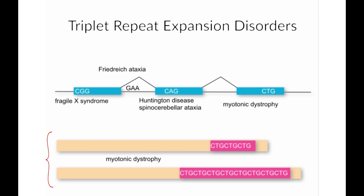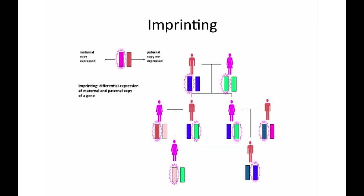The phenomenon of genomic imprinting implies differential expression of the maternal and paternal alleles. Whether it's the mother's copy or the father's copy that is expressed will be a characteristic of each specific imprinted locus. Most genes are not imprinted, but a subset, the exact size of which is at present unknown, are subject to this phenomenon.